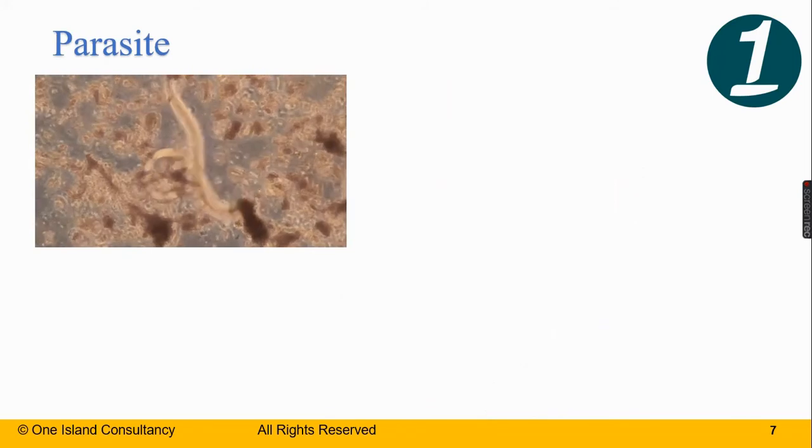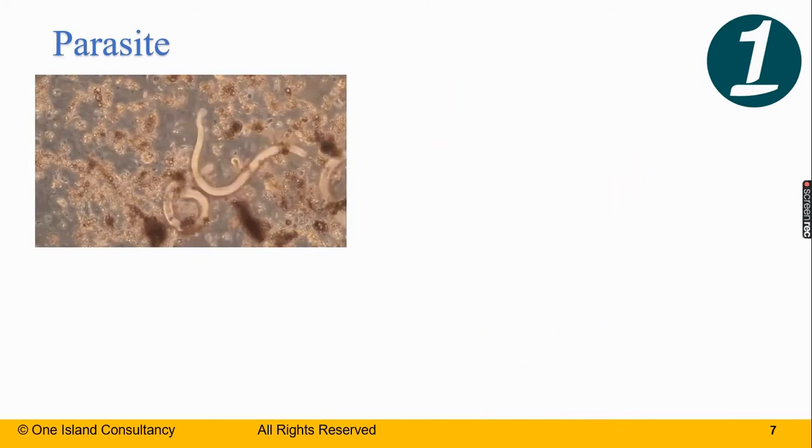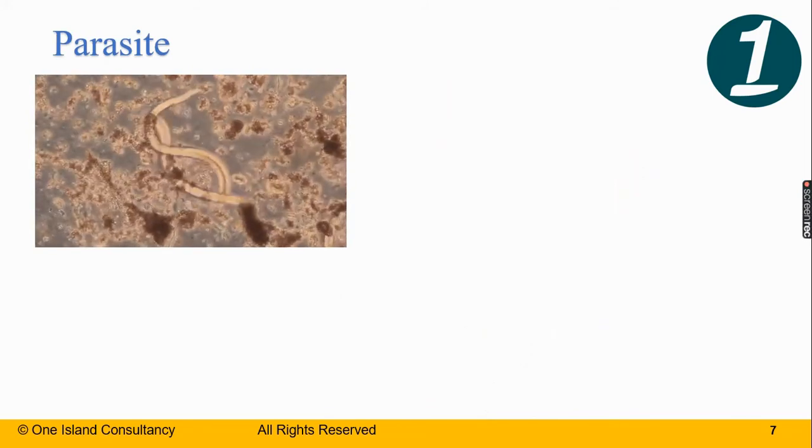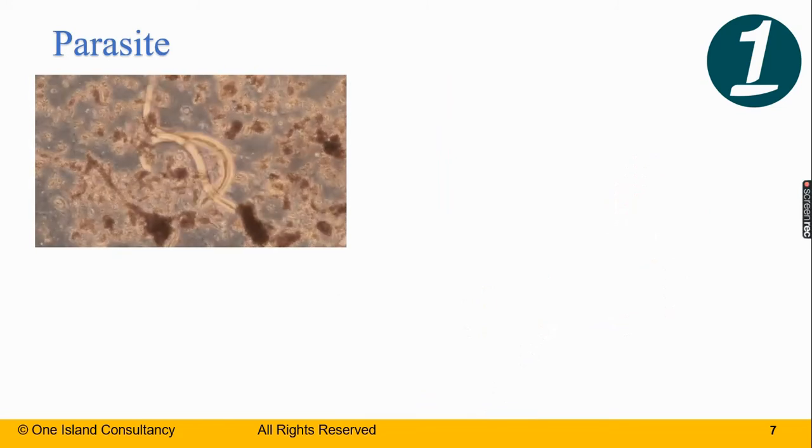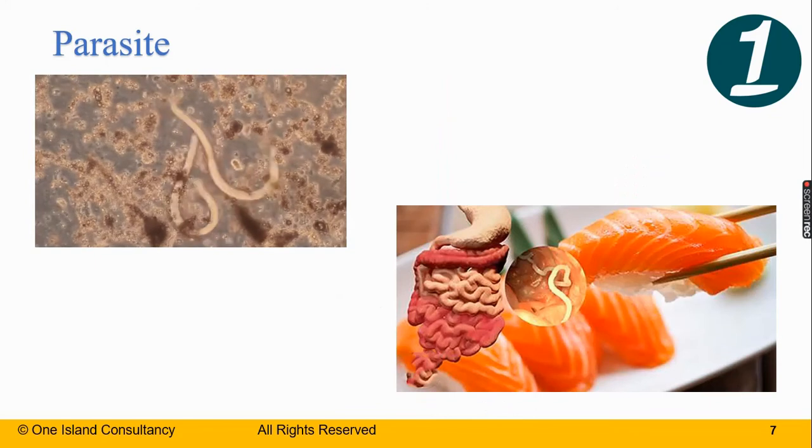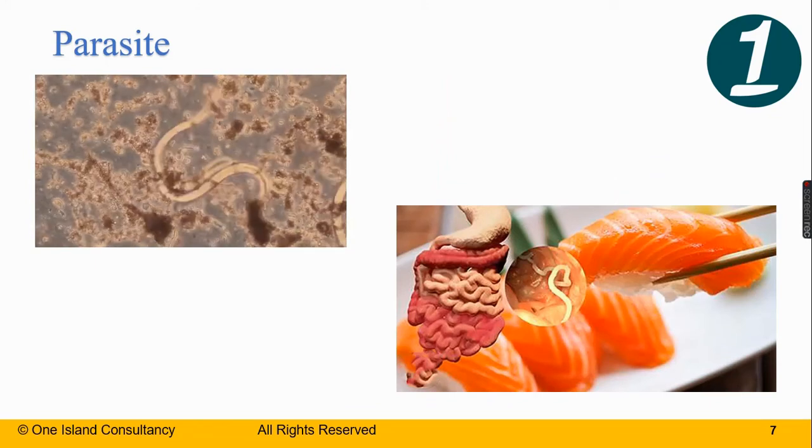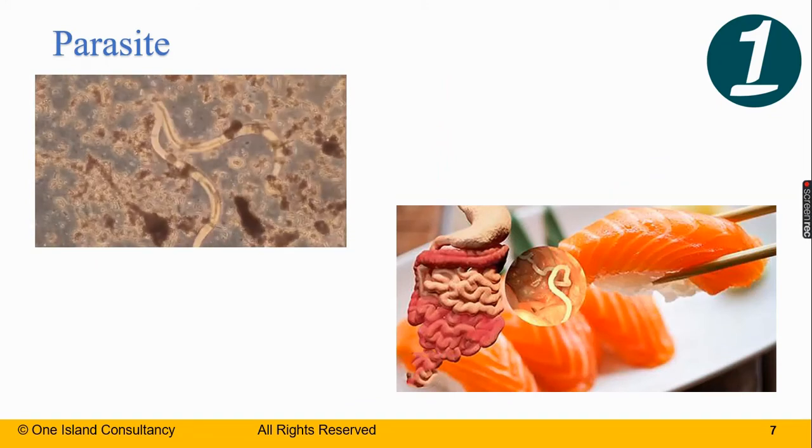Lastly, the parasites are any organism which obtain nourishment from its host organism in order to grow and reproduce. Parasites are normally found in raw ingredients. Eating raw and undercooked food increases the risk of introducing parasites into the human body.